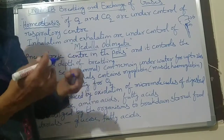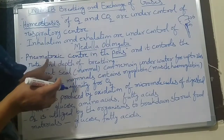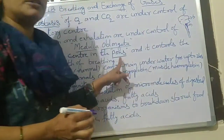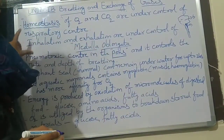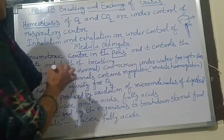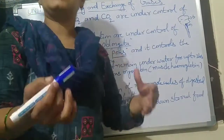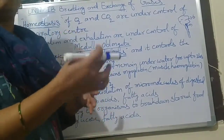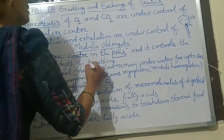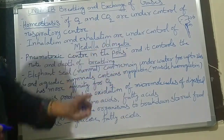Respiration is under the control of the medulla oblongata. The pneumotaxic center is present in the pons — another part of the brain — and it controls the rate and depth of breathing. Breathing rate and depth are under the control of the pneumotaxic center in the pons.